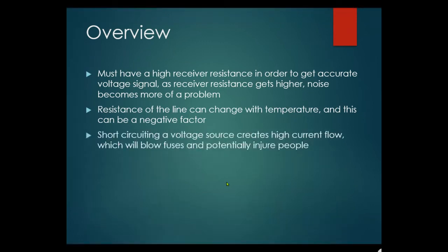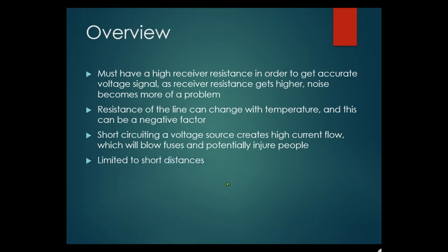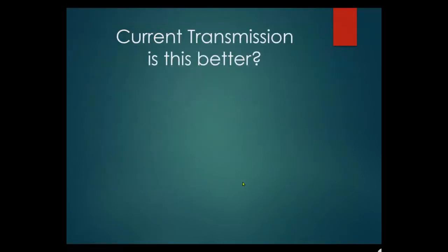A short circuit on a voltage source creates high current flow which can blow fuses and potentially injure people. Voltage-supplied lines are limited to very short distances — overall not great, and you don't see many of them in the field.